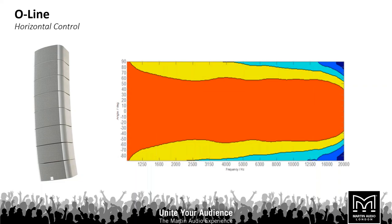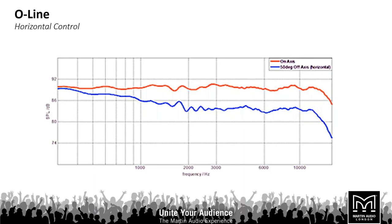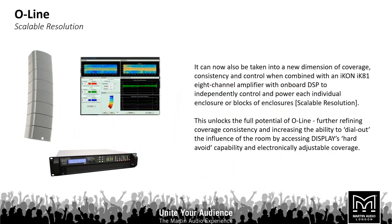The O-Line is pretty consistent at 100 degrees, and slightly wider as we get down to the lower frequencies, throughout the entire operating band. Looking at it another way, the red trace shows the on-axis response of an O-Line system and the blue shows the off-axis — they're very consistent right through the passband.